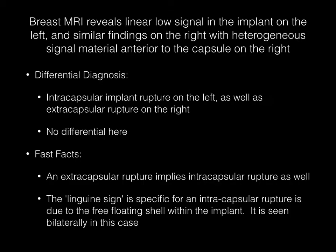This breast MR image reveals linear low signal in the implant on the left and similar findings on the right, with heterogeneous signal material anterior to the capsule on the right. The diagnosis is intracapsular implant rupture on the left, as well as extracapsular rupture on the right. There is really no differential diagnosis here.